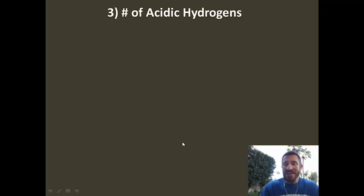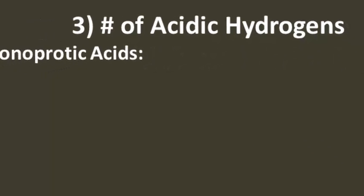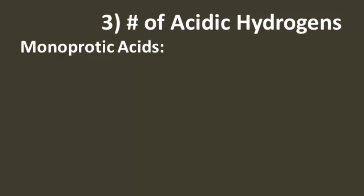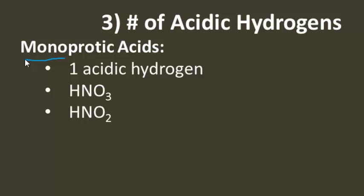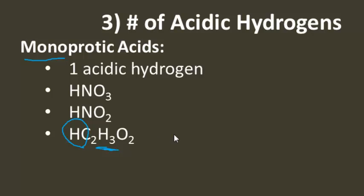The last way of categorizing acids is by the number of acidic hydrogens. If they have one acidic hydrogen, we call it a monoprotic acid. Mono — like monotone, talking at one tone — just means one. So it means there's one acidic hydrogen. For example, HNO3 (nitric acid) is a monoprotic acid. HNO2 (nitrous acid) is a monoprotic acid. And acetic acid is also a monoprotic acid — it has that one acidic hydrogen attached to the oxygen, but the three hydrogens attached to the carbon are not acidic. So even though it has four hydrogens, you can only lose one as a proton.